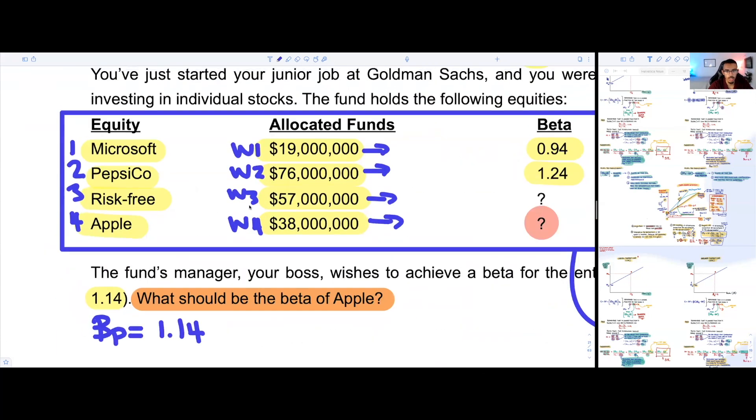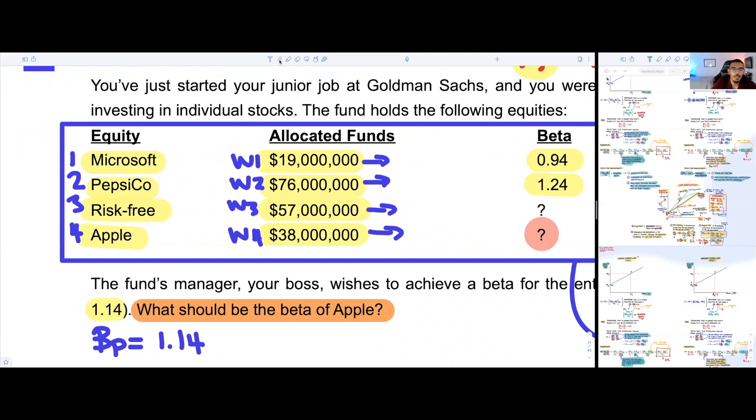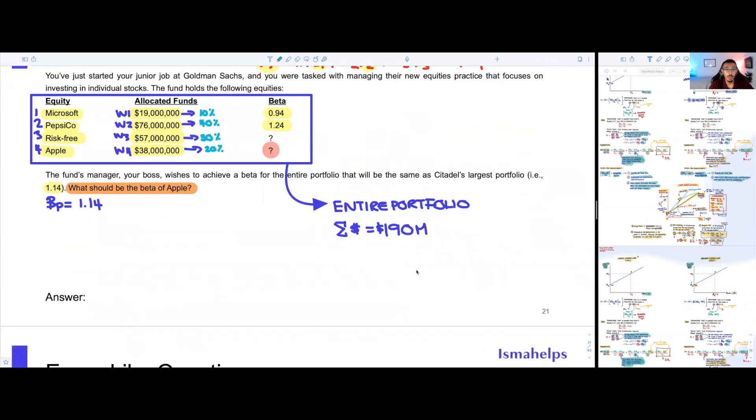We zoom in. We would have for Microsoft, 19 divided by 190. So in other words, we would have 10% of our portfolio invested in Microsoft. We would also have 76 over 190, which is going to be invested in PepsiCo. 38 obviously would be 20%, and then 57 will obviously be 30%. So now we have the weight of every single one of these.